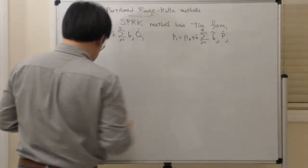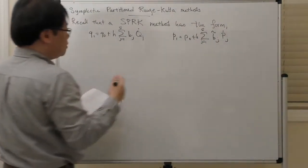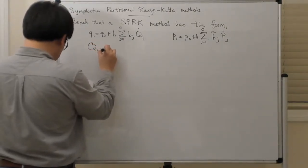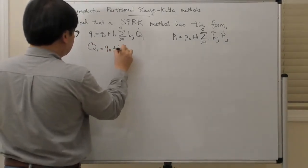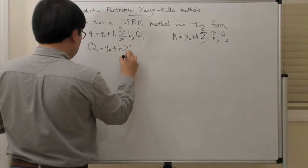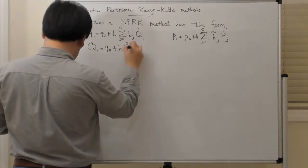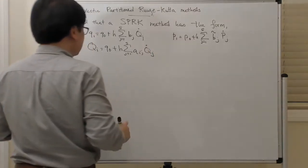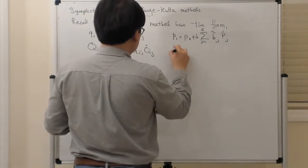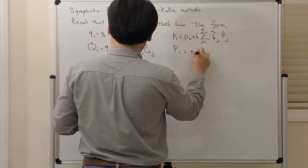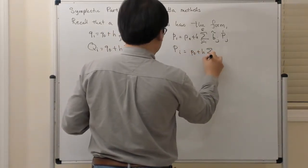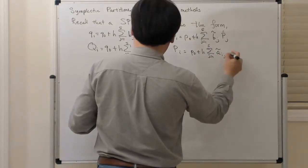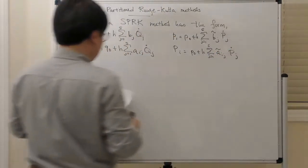The same is true of the internal stage equations. You have QI equals Q0 plus H times the sum from J equals 1 to S of Aij Qj-dot, and for the momenta, PI equals P0 plus H times the sum from J equals 1 to S of A-tilde-Ij Pj-dot, where I goes from 1 to S, and S is the number of stages.